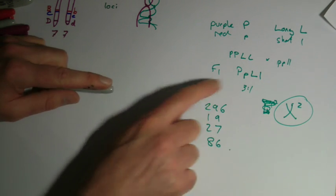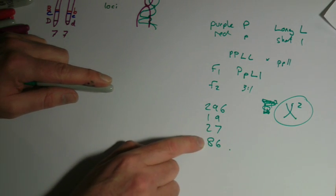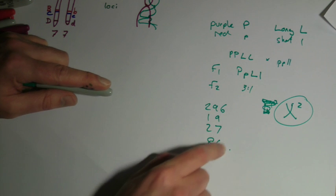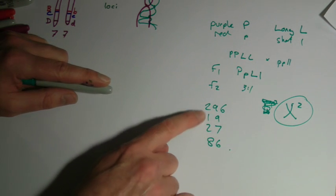Now, is this giving us a 3 to 1 ratio? Well, clearly not, because there's four things on there. Is it giving us a 9-3-3-1 ratio? Well, just looking at it, it doesn't look like it is.